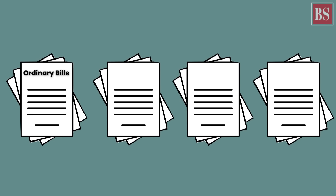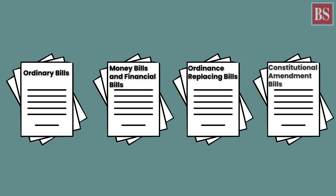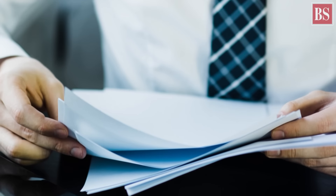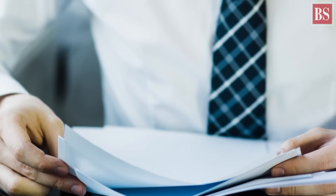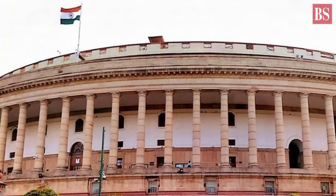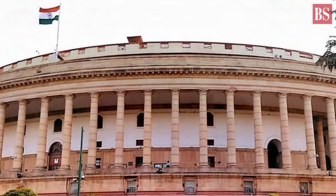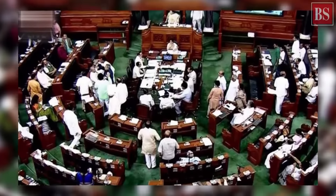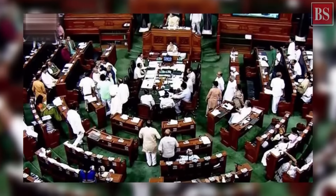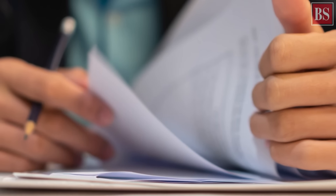There are Ordinary Bills, Money Bills and Finance Bills, Ordinance Replacing Bills and Constitutional Amendment Bills. Apart from the Money and Finance Bills, the other two bills can be presented in either of the Houses. But the Money and Finance Bills have to be introduced in Lok Sabha. The Upper House of the Parliament has limited power over it.